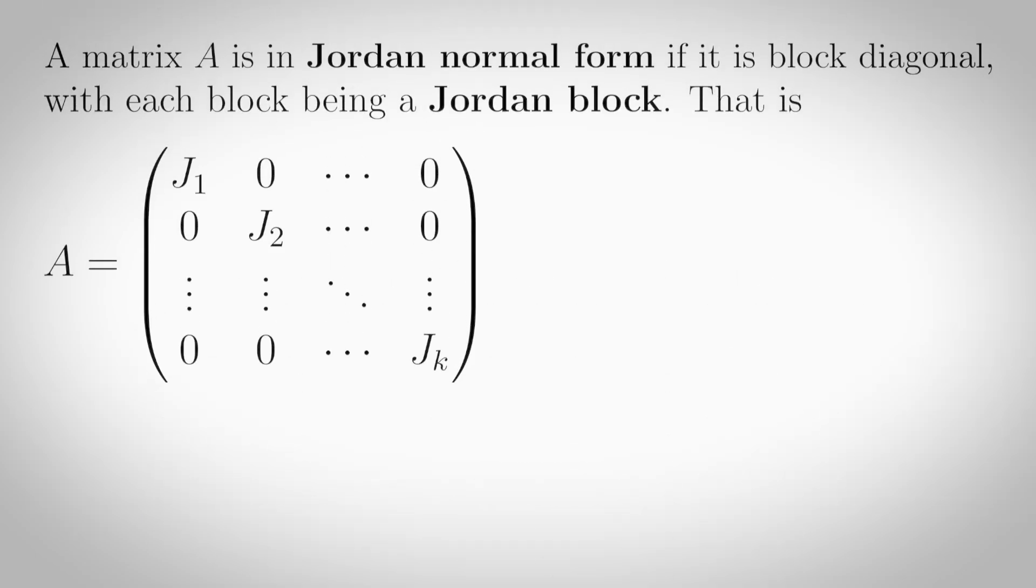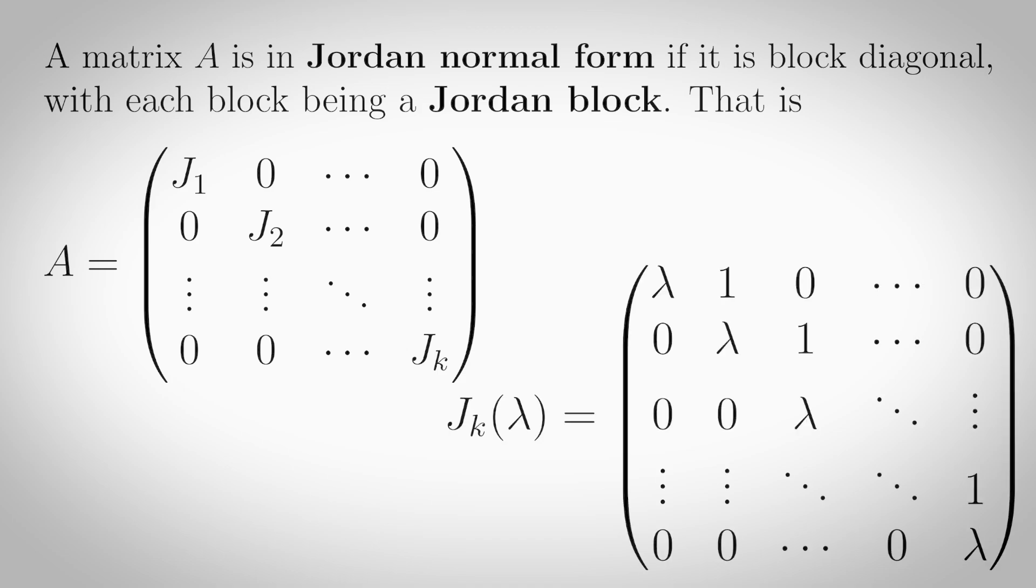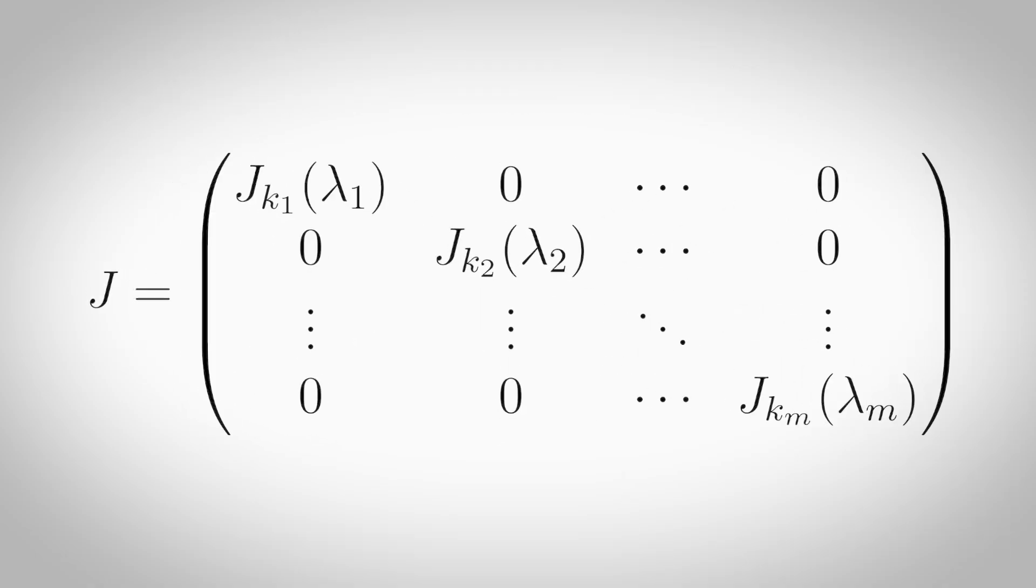Jordan Normal Form. A matrix A is in Jordan Normal form if it's a block diagonal with each block being a Jordan block. A Jordan block for eigenvalue lambda of size k looks like this. So Jordan Form looks like this.